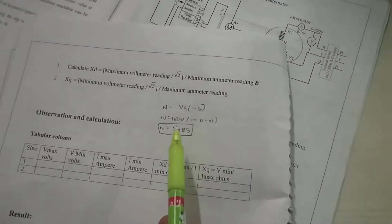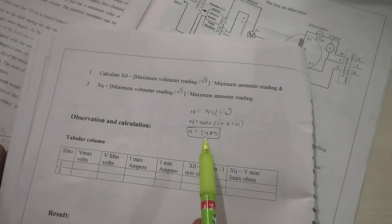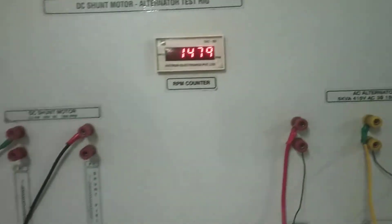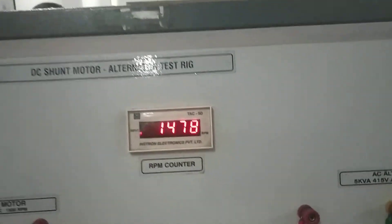For the 1% slip, mandatorily, the applied speed should be 1485. It is approximately 1485.